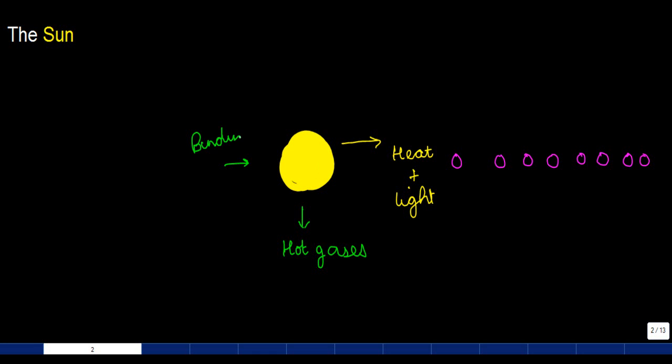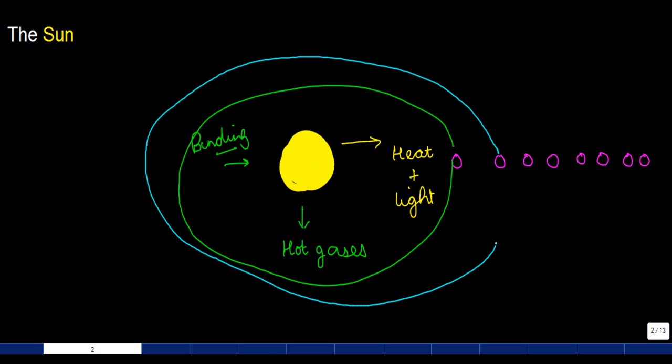If the Sun was not there, you wouldn't know how these planets would behave. Each of these planets revolves around the Sun on a fixed path, and this fixed path is known as the orbit of the planet.